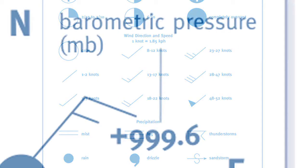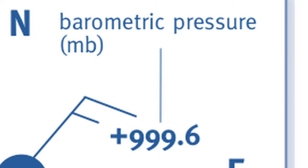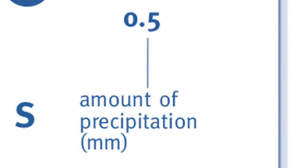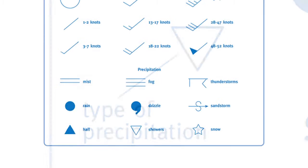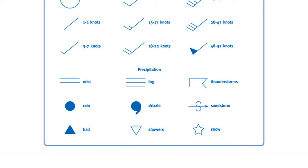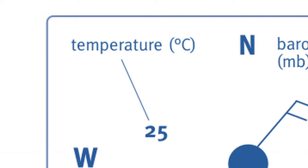The numbers to the right of the center circle indicate barometric pressure in millibars. A plus or minus symbol tells whether the pressure has increased or decreased since the last reading. The number below the barometric pressure indicates the amount of precipitation in millimeters. The symbol to the lower left of the center circle tells the type of precipitation according to the international code listed on Activity Sheet 6. The number in the upper left represents the air temperature in degrees Celsius.